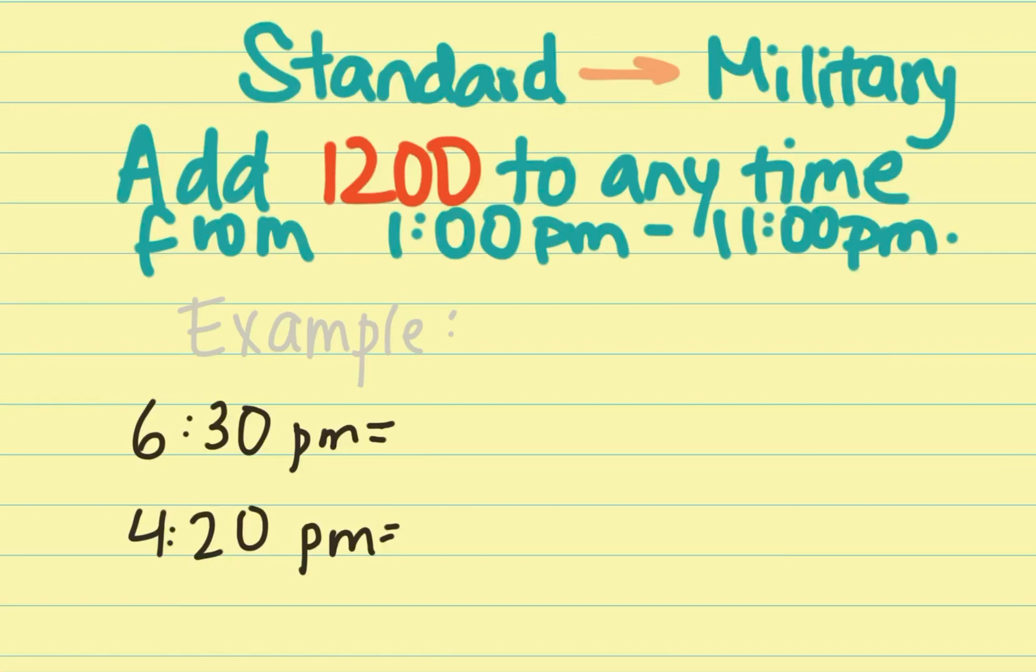We have two examples. 6:30 p.m., you just add 12. So 6:30 plus 12 will be 18:30.